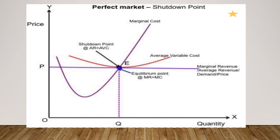At the shutdown point, the average variable cost equals average revenue. The company must meet the average fixed cost within one month, or else it should shut down.